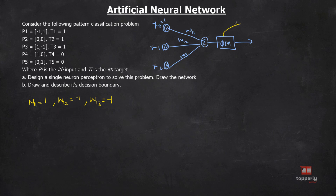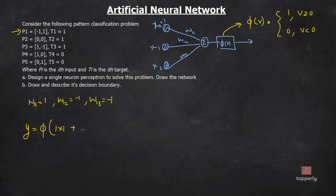Let's take the activation function as a threshold function: phi(v) equals 1 when v is greater than or equal to 0, and 0 when v is less than 0. For input set P1, y equals phi of (x0 times w11 plus first_input times w12 plus second_input times w13) equals phi(1 times 1 plus minus 1 times minus 1 plus minus 1 times 1) equals phi(1), which equals 1.